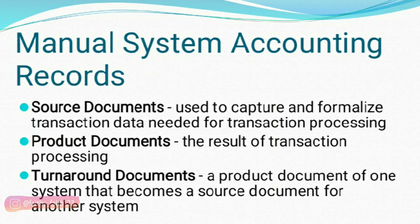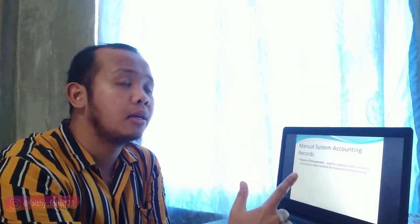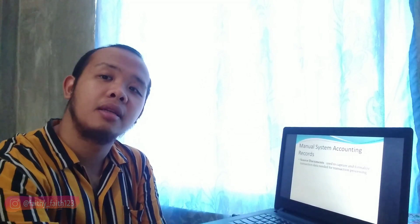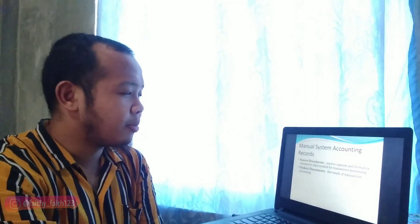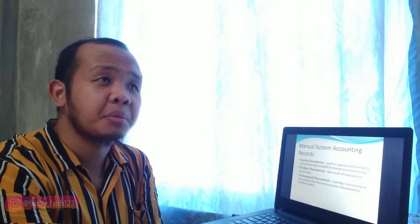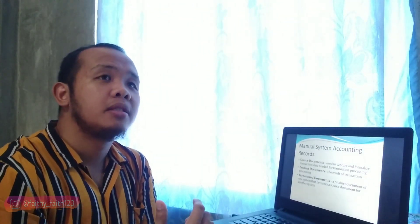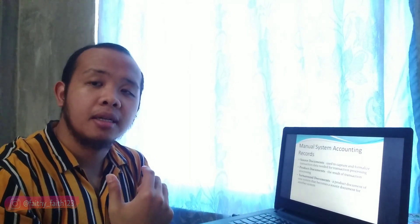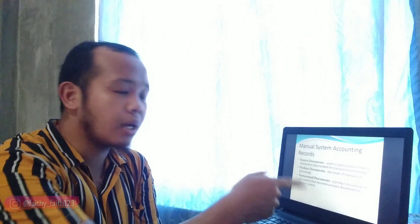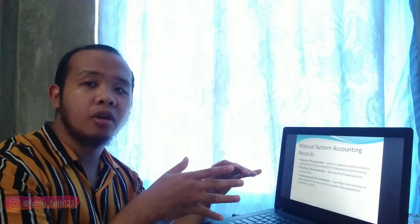Manual system accounting records: Source documents are used to capture and formalize transaction data needed for transaction processing. Examples of source documents include invoices, official receipts, receiving reports, delivery receipts, and many more. Product documents are the result of transaction processing. Turnaround documents are a product document of one system that becomes a source document of another system. For example, the delivery receipt or OR from the supplier — that is their product document. When it reaches us, it becomes our source document for our transaction processing when we pay them.